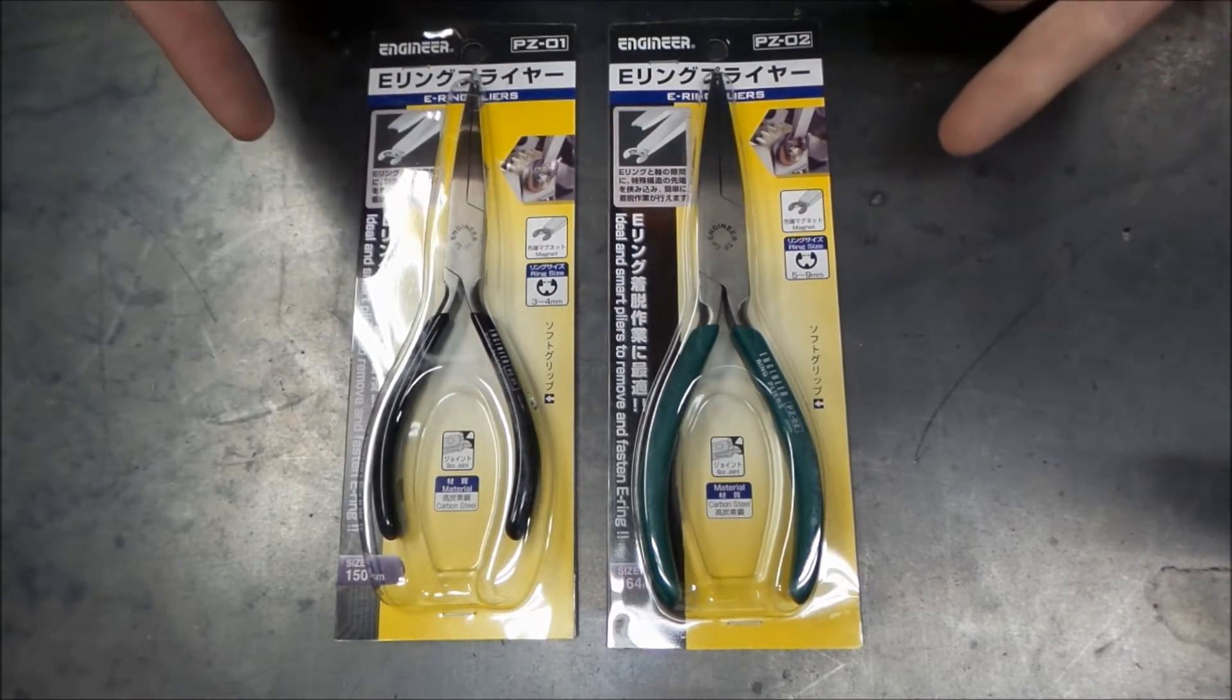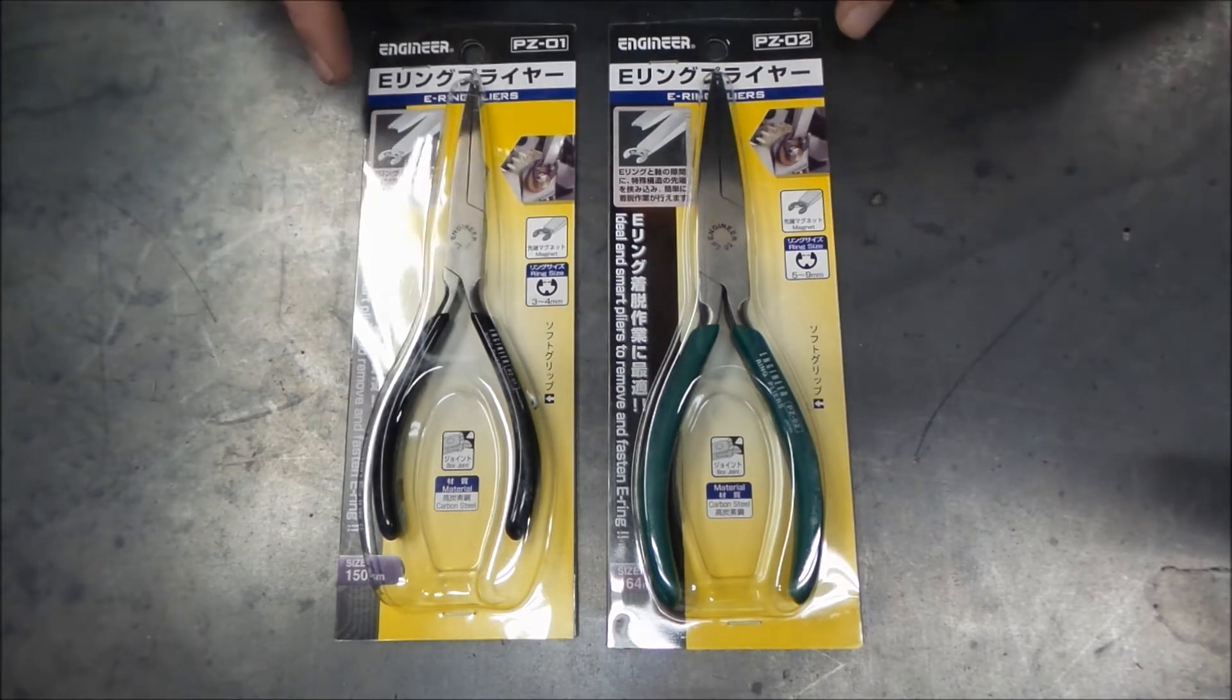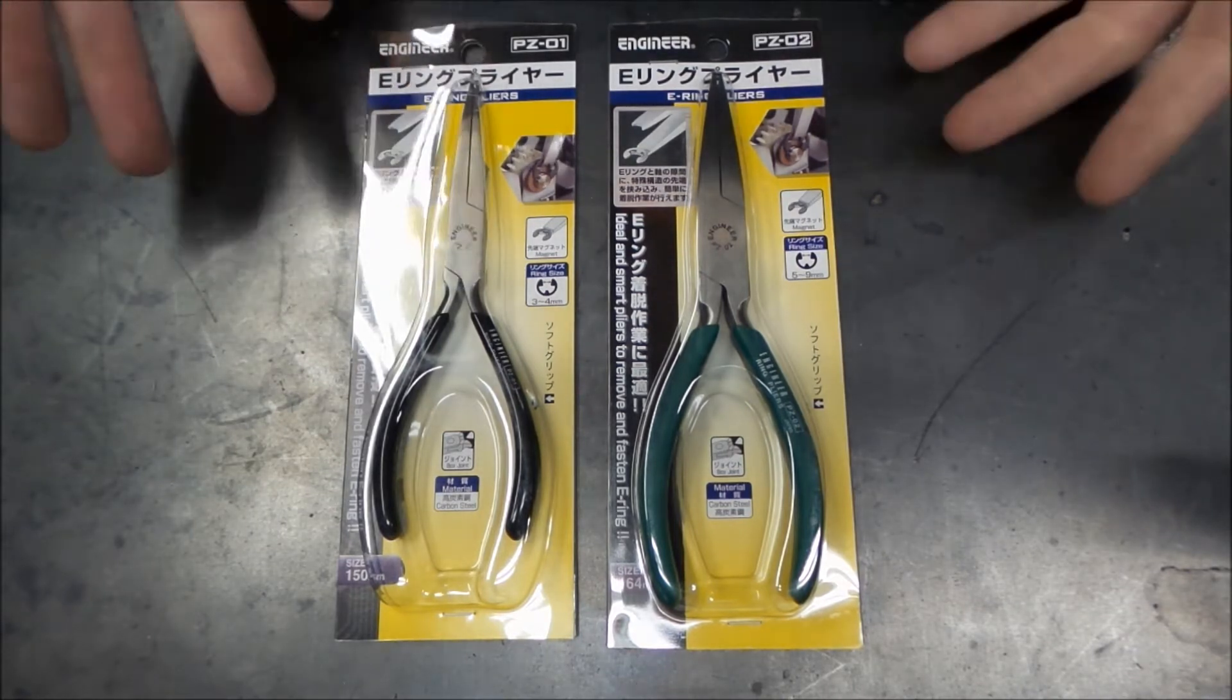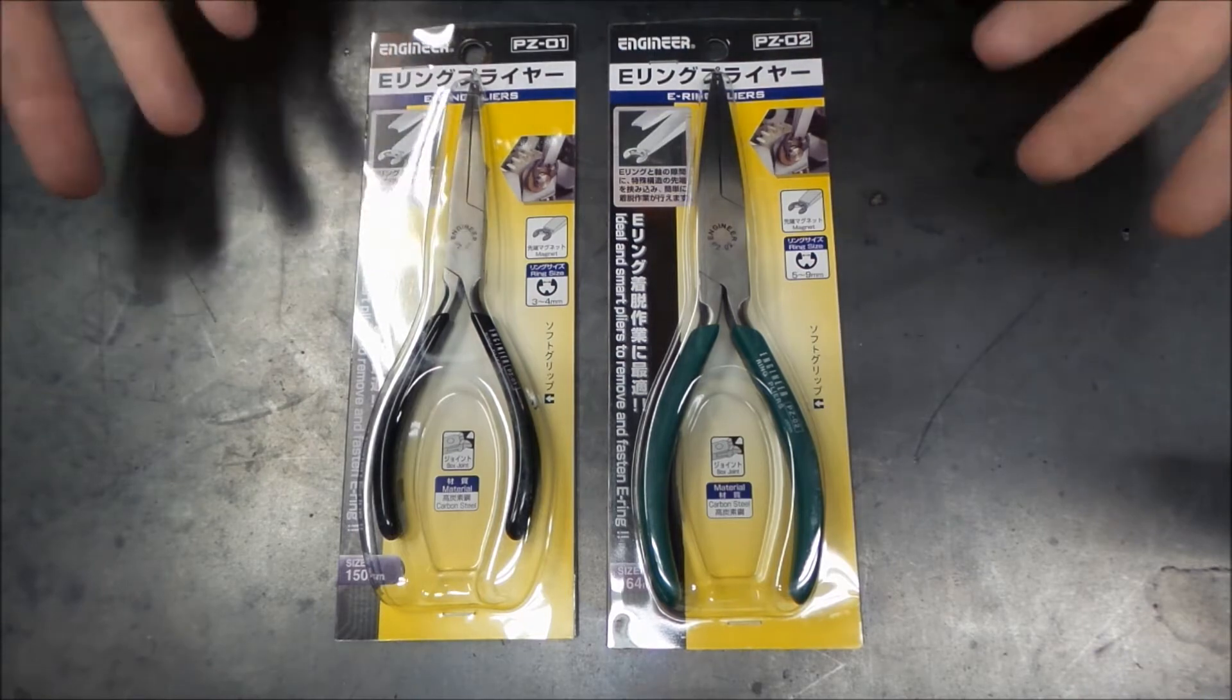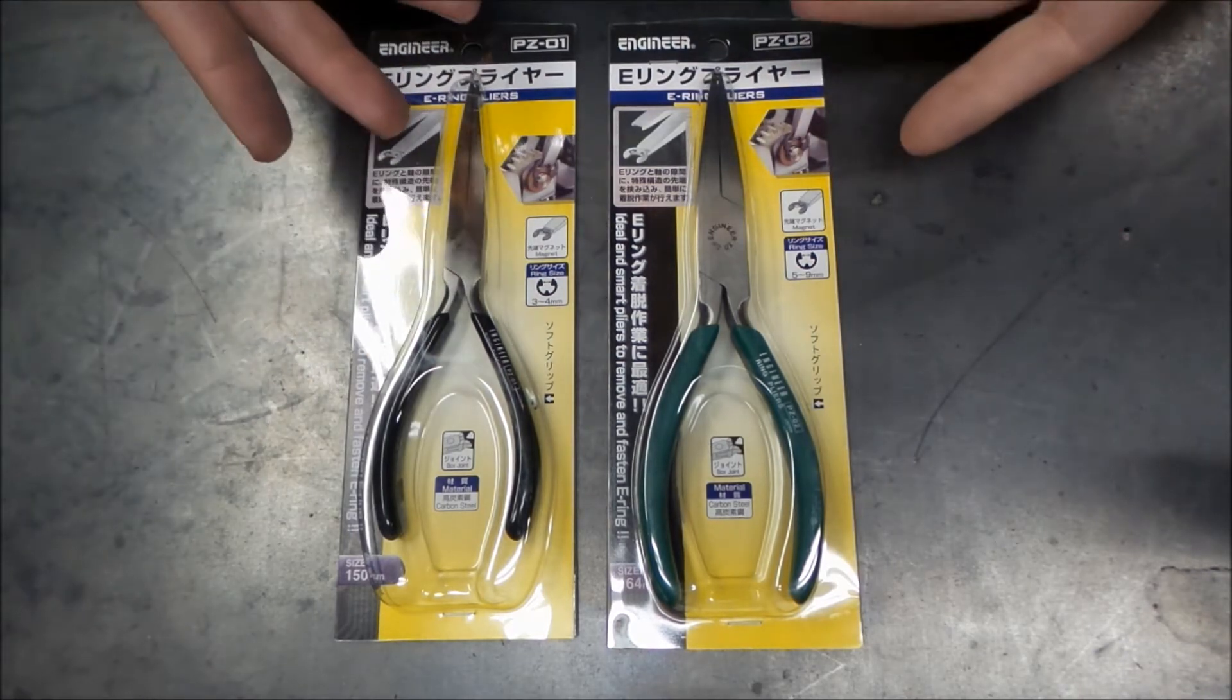Welcome back to the shop. Today something pretty exciting - unique tools from Japan. These are E-ring pliers. I've never come across these before, new one for me, and naturally had to get some.